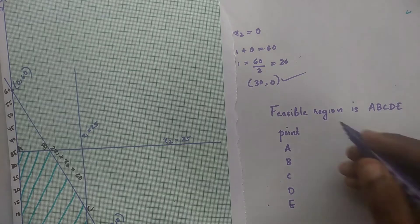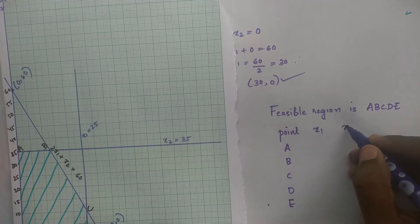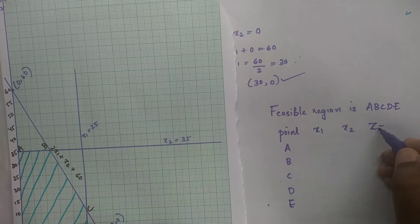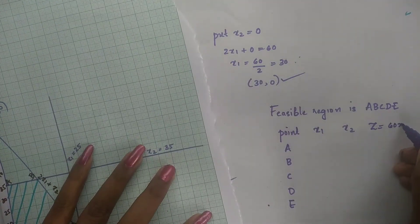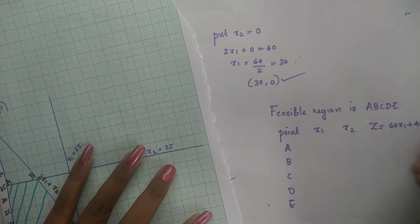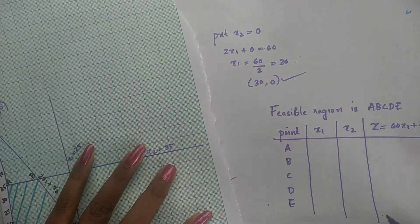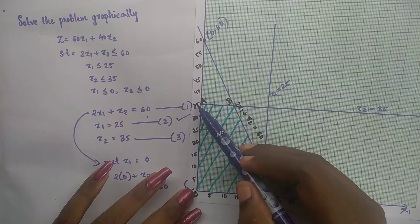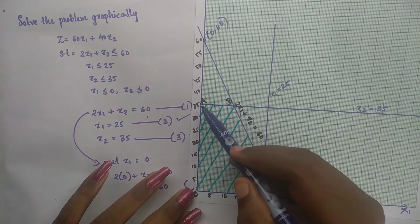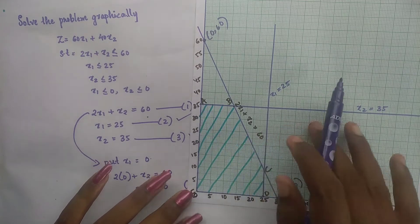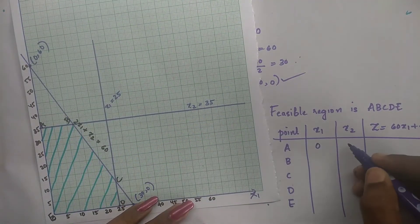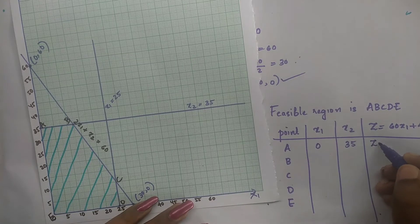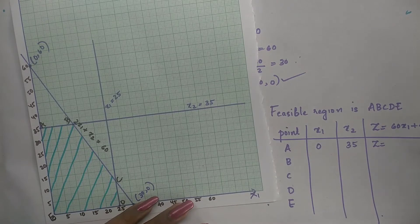Now we take corner points A, B, C, D, and E, and substitute x1 and x2 values into Z is equal to 60x1 plus 40x2. Point A has x1 equal to 0 and x2 equal to 35. So Z is equal to 60 times 0 plus 40 times 35, that is 0 plus 1400, which equals 1400.